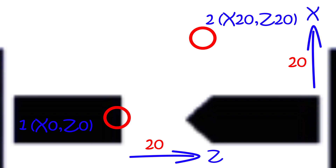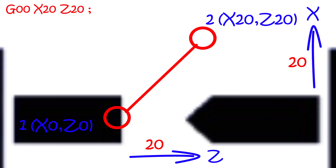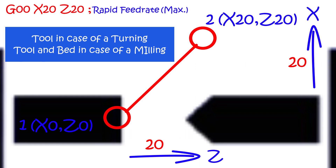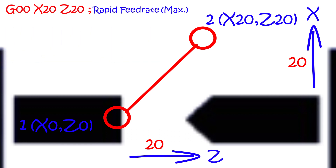We have four different ways to move the tool from position number 1 to position number 2. According to the first method, we will program a block: G00, X20, Z20, semicolon. With this block, the controller will give a command to move the tool linearly to coordinate position 20,20 with rapid feed rate. Rapid feed is the maximum allowable feed for a tool saved by default in a controller. Generally, rapid feed units are mm per minute. Rapid feed varies from machine to machine, but common values are 2000 mm per minute, 5000 mm per minute, or even 10000 mm per minute.